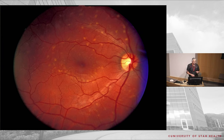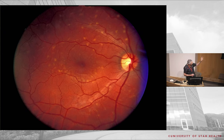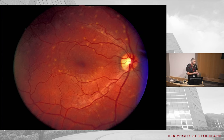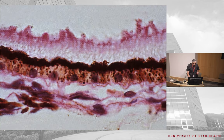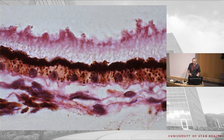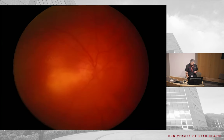These are called pisciform lesions — 'pisciform' means fish-like, resembling little goldfish crackers. This is consistent with Stargardt's disease (also called fundus flavimaculatus), which is characterized by deposition of lipofuscin into the RPE. The lipofuscin disturbs the macula but also causes these peripheral pisciform changes to the RPE.